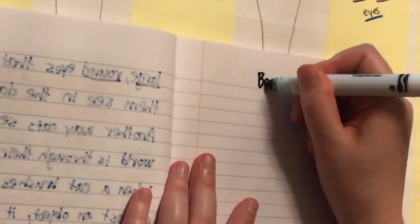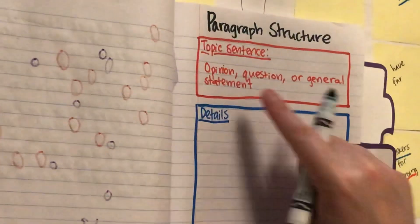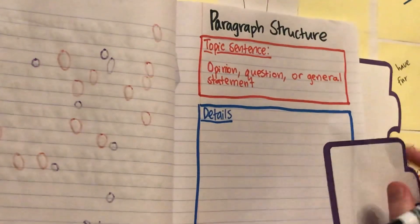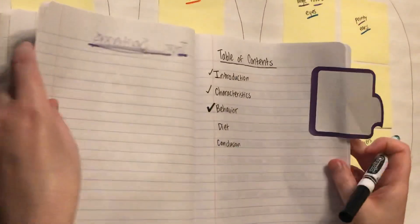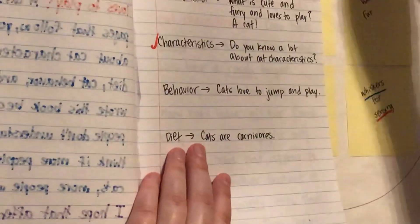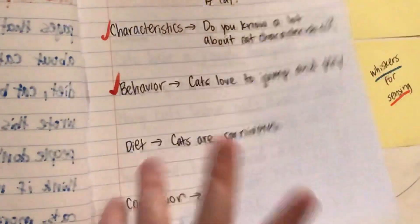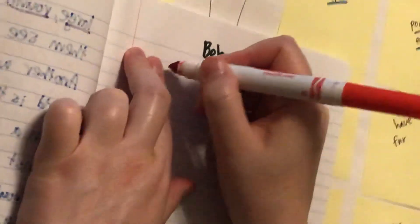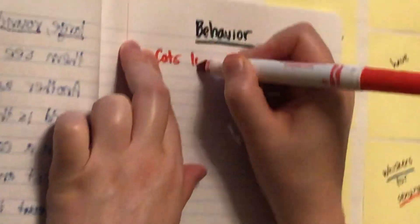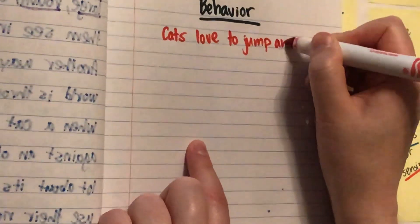So first I need to write my heading at the top of the page, which is 'Behavior.' Now when I look at paragraph structure, the next thing I write is a topic sentence. So I should be able to copy down the topic sentences I already brainstormed. My topic sentence for behavior is: 'Cats love to jump and play.' So I'm going to indent — cats love to jump and play.